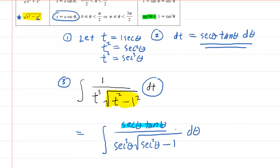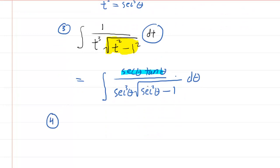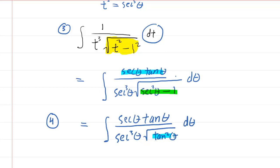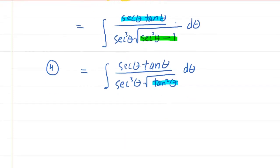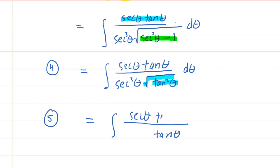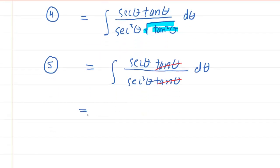The fourth step is to substitute secant squared theta minus one with tangent squared theta. After making that substitution, we simplify in step five. The square root of tangent squared leaves just tangent theta. A factor of tangent theta in the numerator cancels with the tangent theta in the denominator. Then a factor of secant theta also cancels, reducing secant cubed to secant squared.